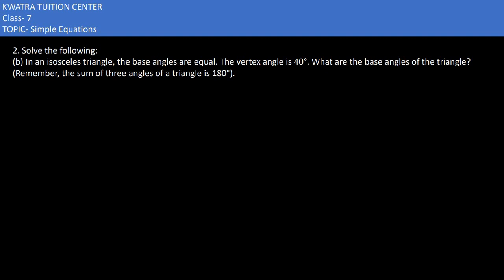In part b of this problem, it says in an isosceles triangle the base angles are equal. This is the same question we did in the first exercise. An isosceles triangle is one where the base angles are exactly the same.